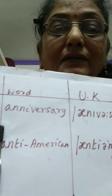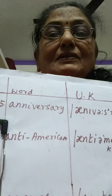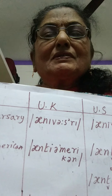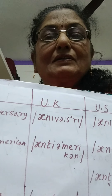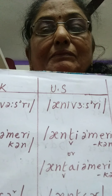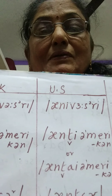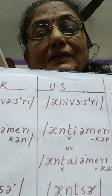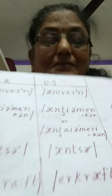The next word is 'anniversary.' We have the tendency to pronounce it as 'anniversary,' but it is 'anniversary.' When you want to stress it, you can say 'anniversary,' but normally we say 'anniversary.' Similarly, Americans also pronounce it the same way — 'anniversary' — though the phonetic symbol for that 'a' sound is placed differently.